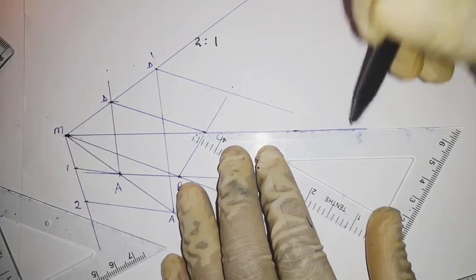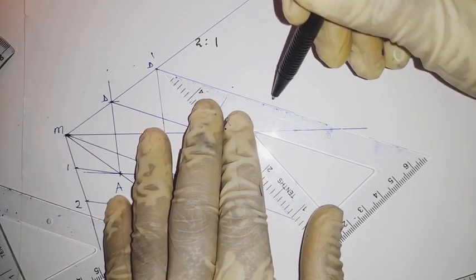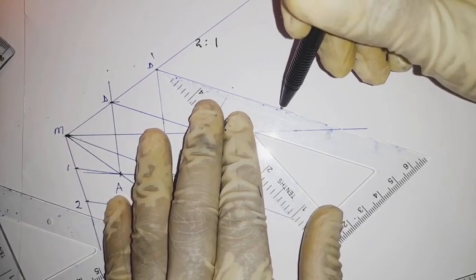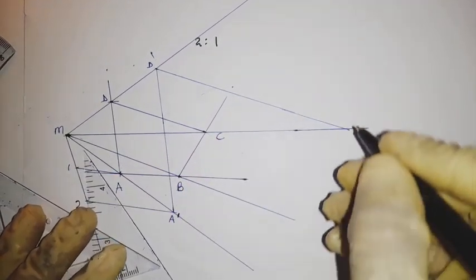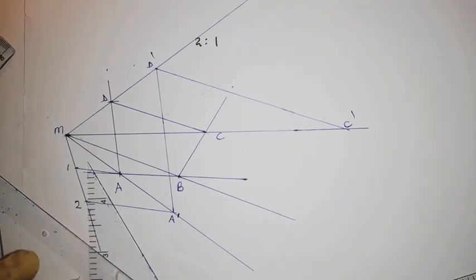So we can elongate this side. Just elongate this side, then again we just bring this other line to meet it somewhere there. So this one becomes a point C prime.